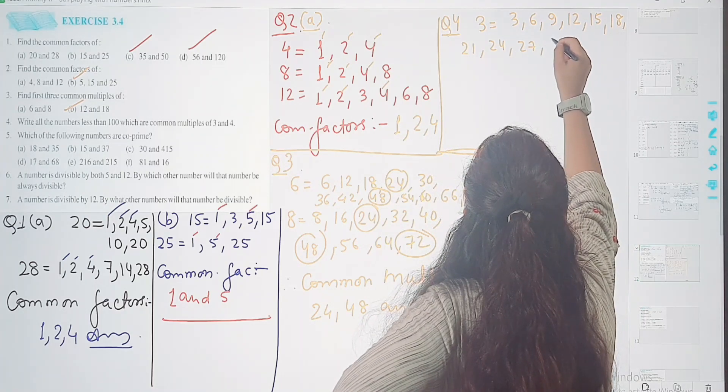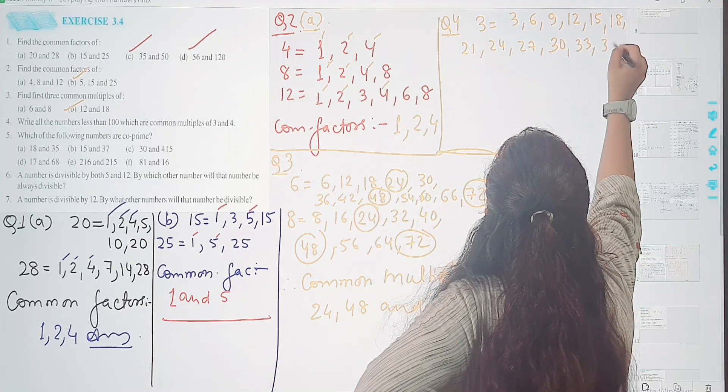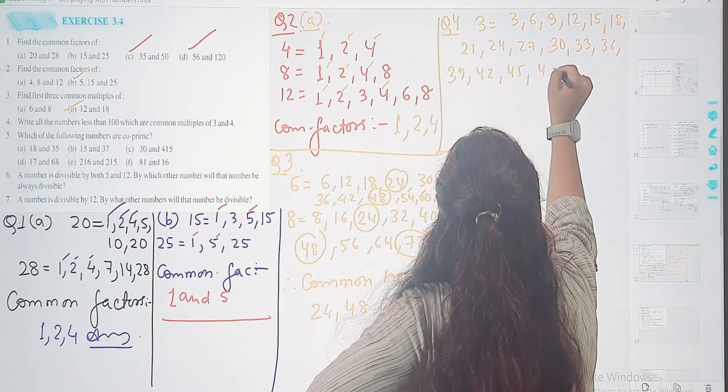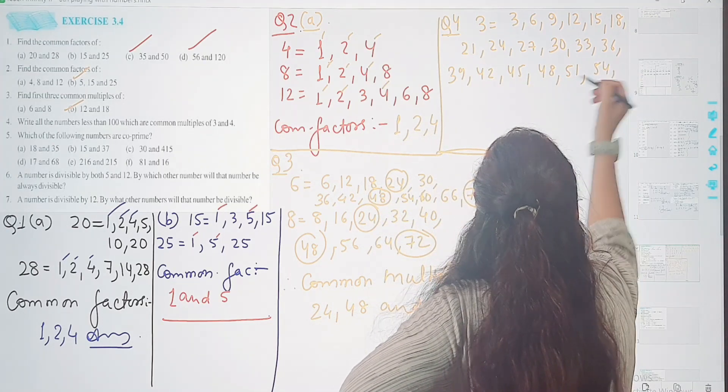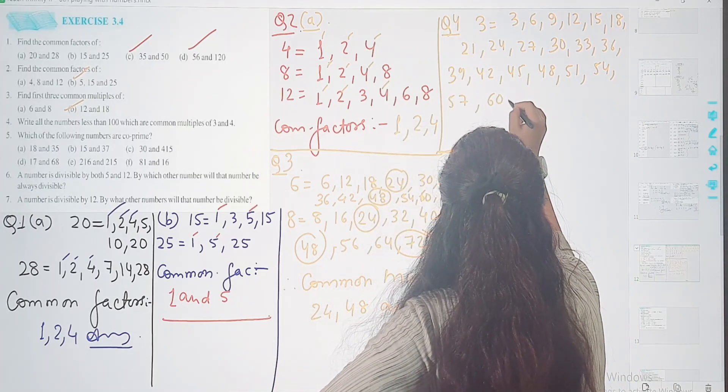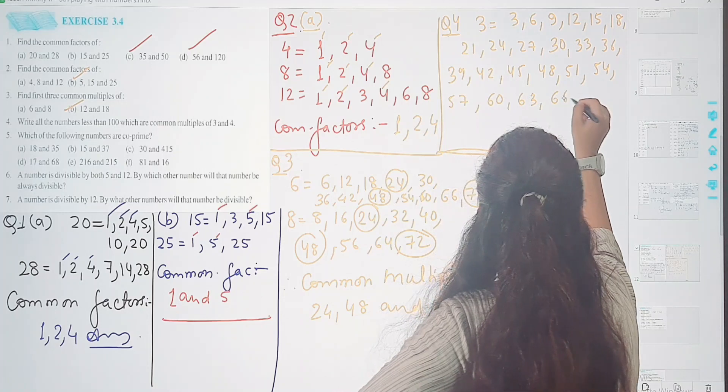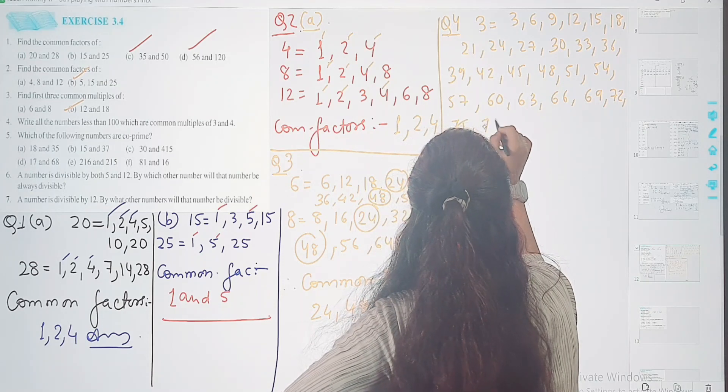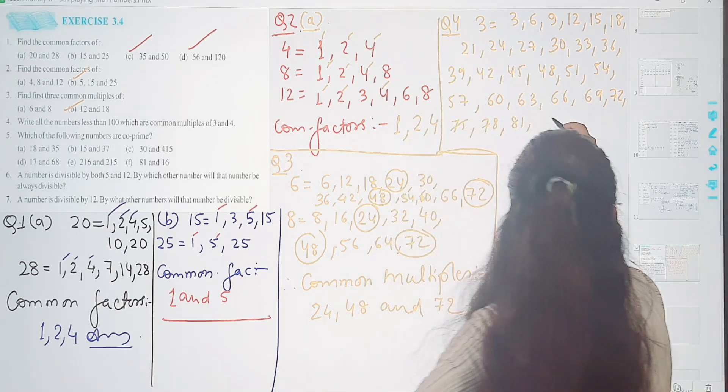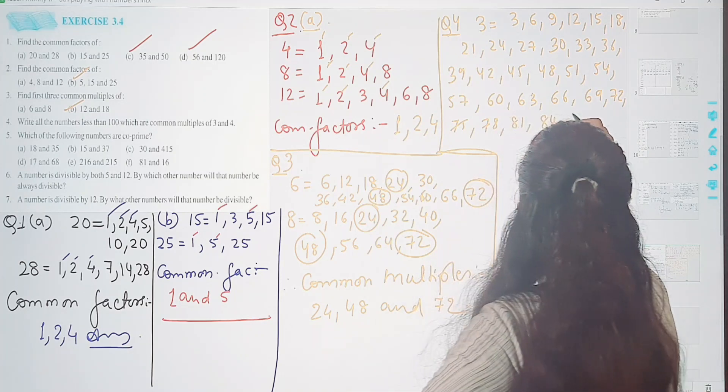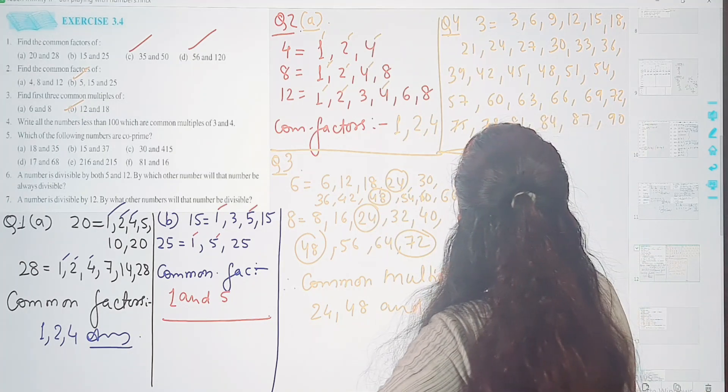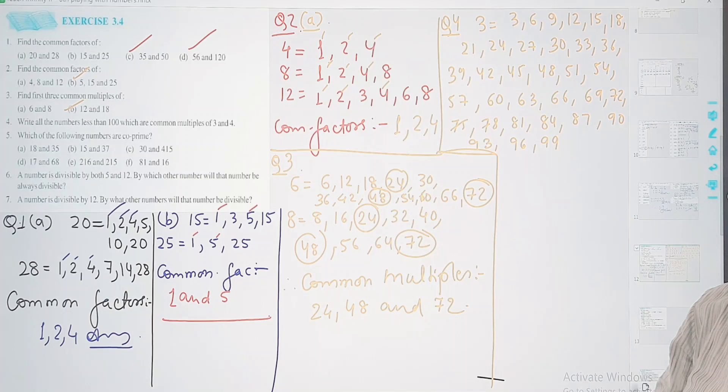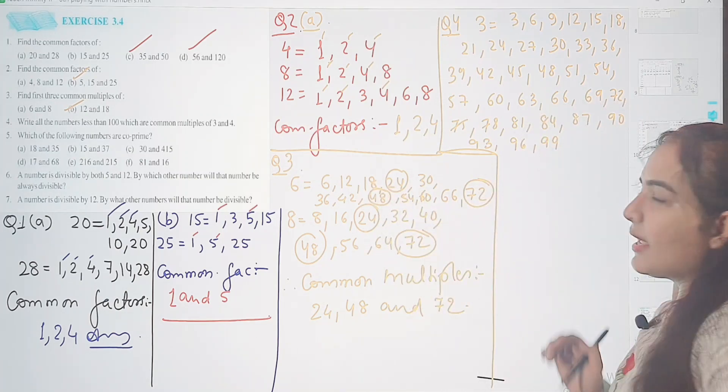21, 24, 27, then 30, 33, 36, 39, 42, 45, 48, 51, 54, 57, 60, 63, 66, 69, 72, then 75, 78, 81, then 84, then 87, then 90, then 93, then 96, then 99. Aapne less than 100 liqh diya hai 3 ke liye.